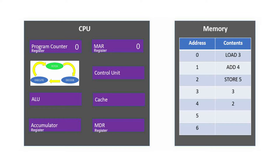The control unit sends a signal to memory location 0, and the actual data is transferred to the memory data register. Cache is used to store a copy of this data. This is the end of the Fetch cycle, and so the program counter increases by 1.